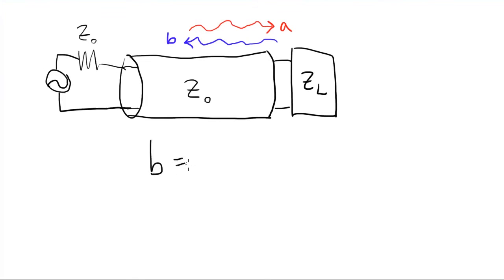If we call the amplitude of the incoming wave A and the amplitude of the outgoing wave B, the ratio of the outgoing incoming amplitudes we'll call S. And we can write a little equation, B equals SA.